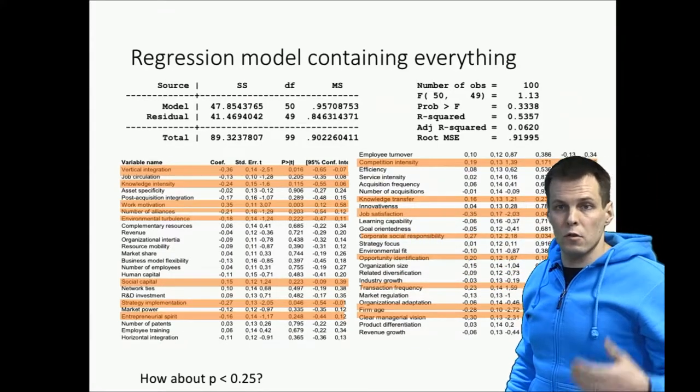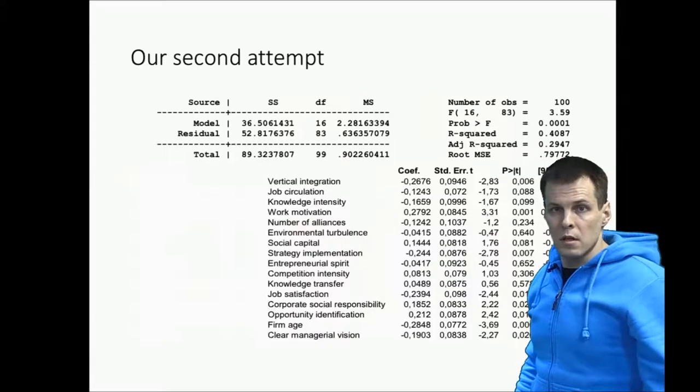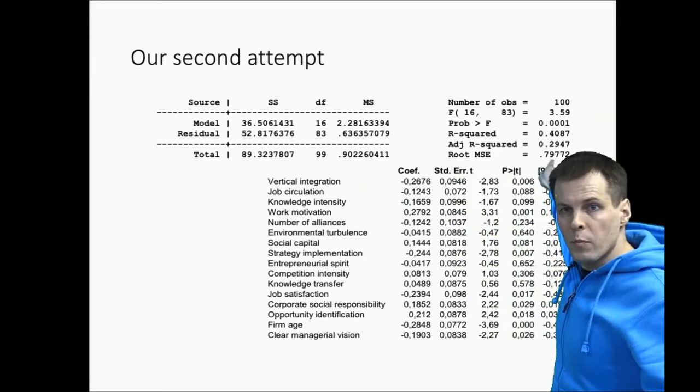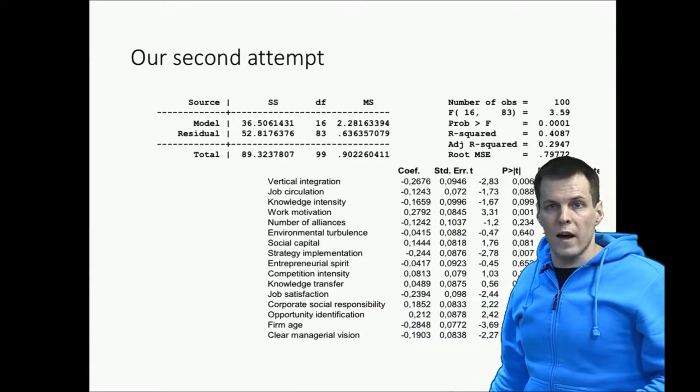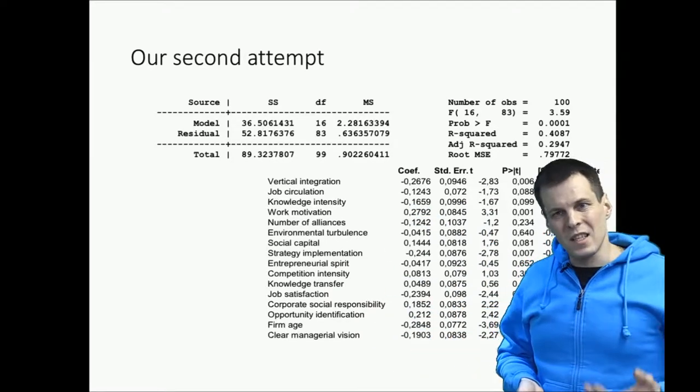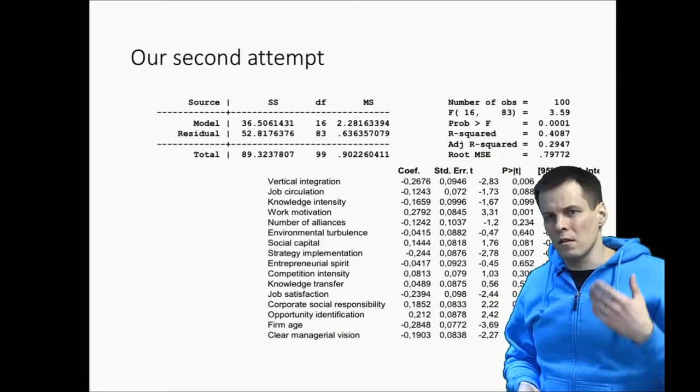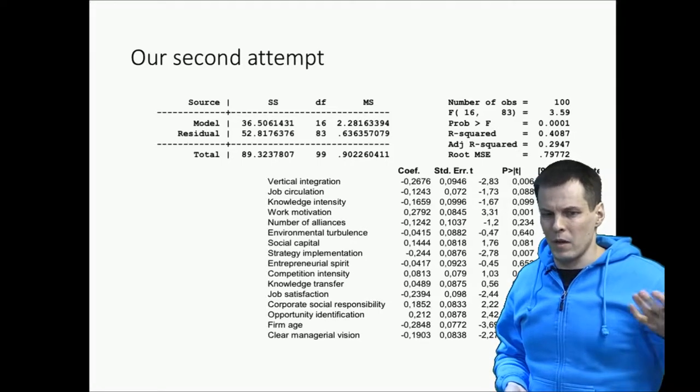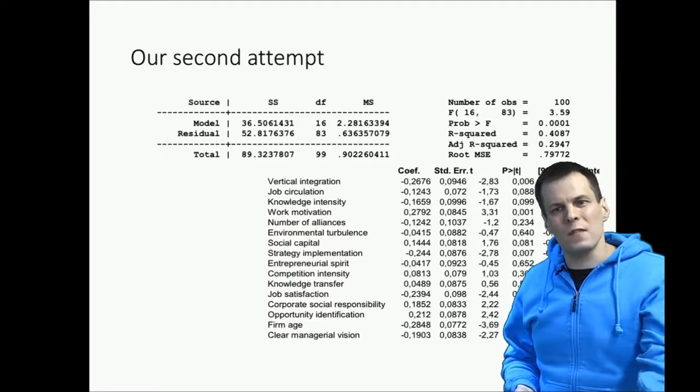Pasi decided to choose those variables and then he redid his analysis. The results were still impressive. He got an R-square of more than 40% with just about a dozen or so variables. But still, if you say that company performance depends on a dozen different factors, it's not as cool and as impressive as saying it depends on, for example, only five or six factors.